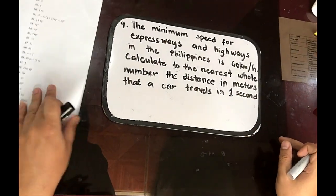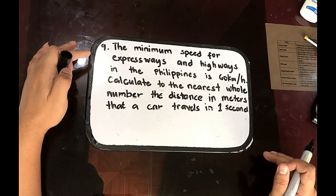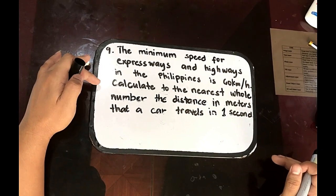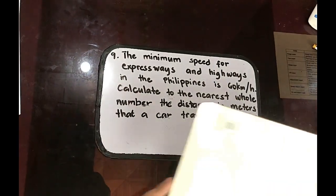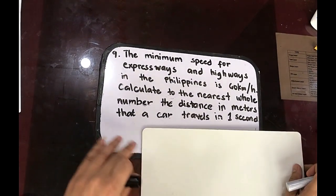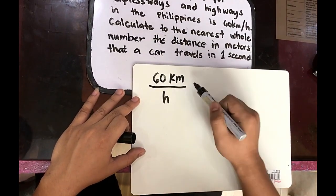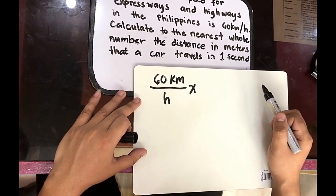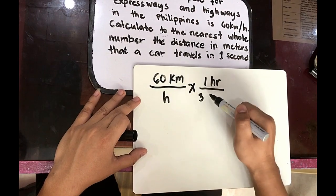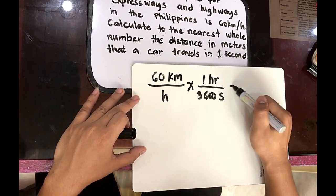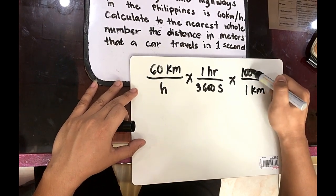Number 9. The minimum speed for expressways and highways in the Philippines is 60 kilometers per hour. Calculate to the nearest full number the distance in meters that a car travels in one second. So let us use this one. So we have 60 kilometers per hour. We are going to multiply. Our unit must be meters per second. We know that one hour is equivalent to 3600 seconds. And one kilometer is equivalent to 1000 meters.